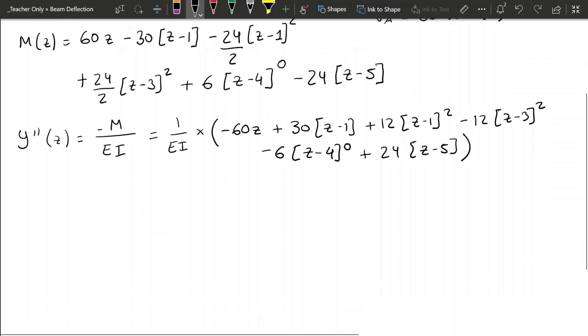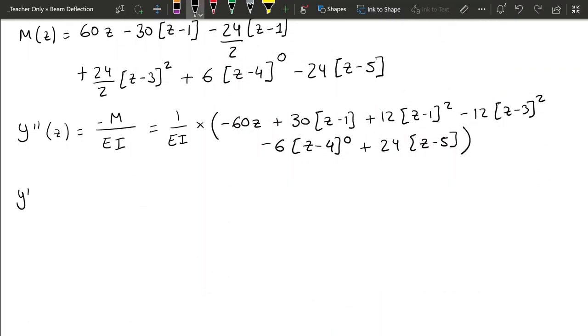So now, we can proceed and get our rotation, that is, as it was before, the integral of the curvatures with respect to z. So we're going to get 1 over EI, and now we can substitute this with minus 30, z squared, minus 15, z minus 1, squared,